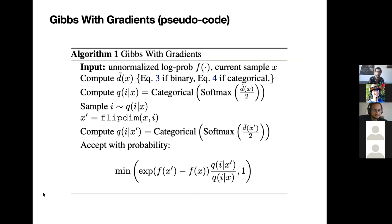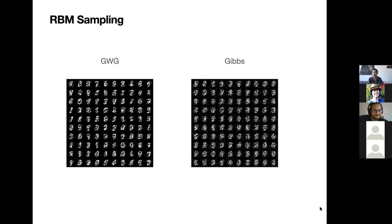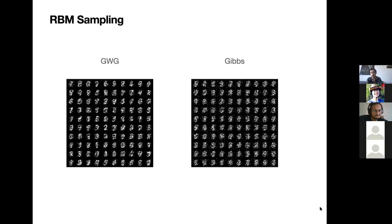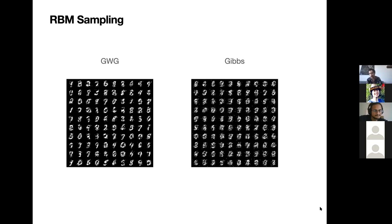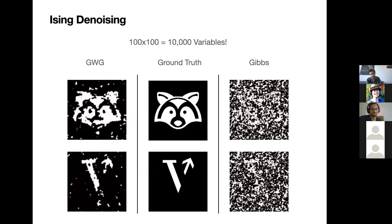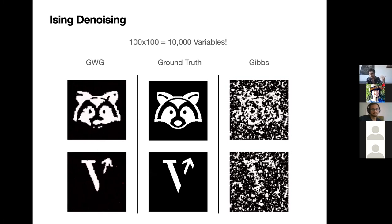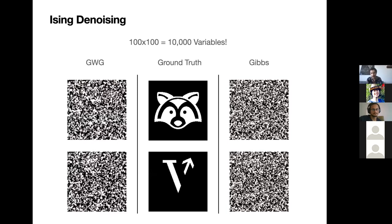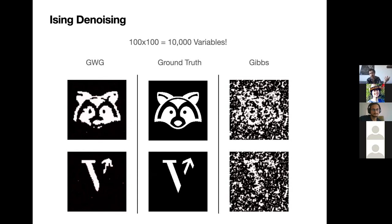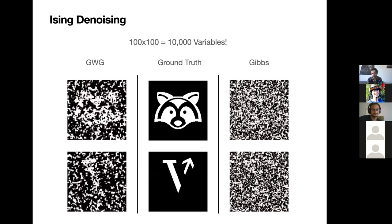Gibbs-with-Gradients is a Metropolis-Hastings sampler where the proposal distribution over dimensions to flip approximates the optimal locally balanced proposal, computed via a Taylor series on the energy function's continuous interpretation. It has no hyperparameters to tune — which is the holy grail of MCMC. Visually, we push into the continuous representation, estimate likelihood values at nearby discrete points, parameterize a proposal over local discrete moves, sample from it, apply MH correction, and advance the sample. The PyTorch implementation is under 10 lines of code. Compared to Gibbs sampling and other discrete samplers, Gibbs-with-Gradients leads to notably faster convergence and considerably less computation.